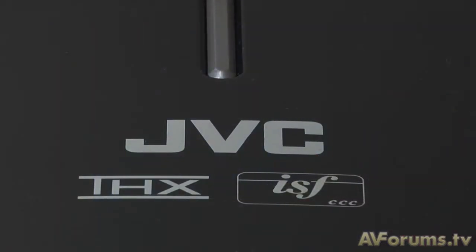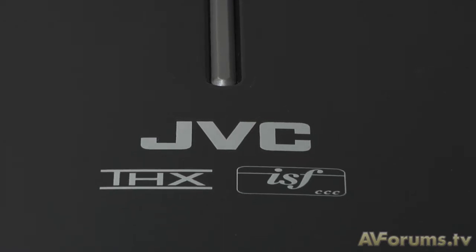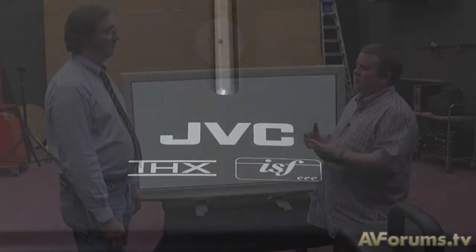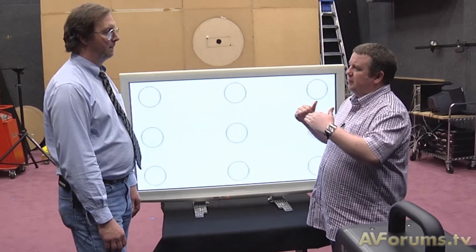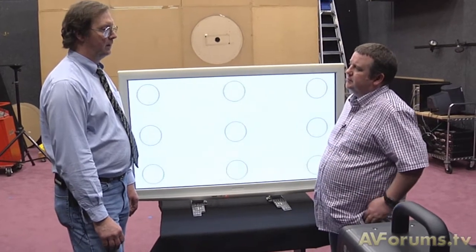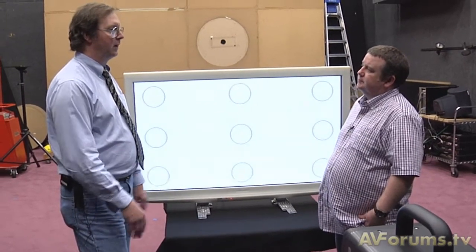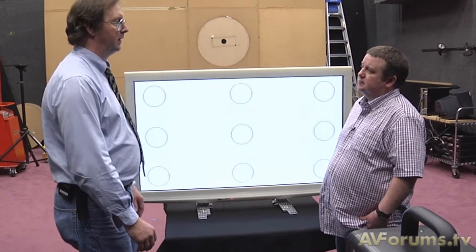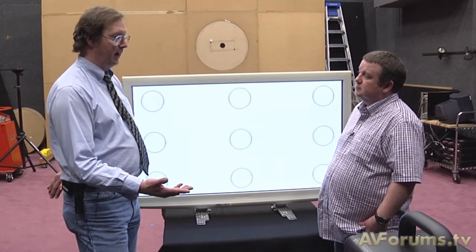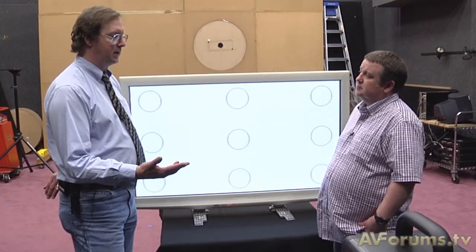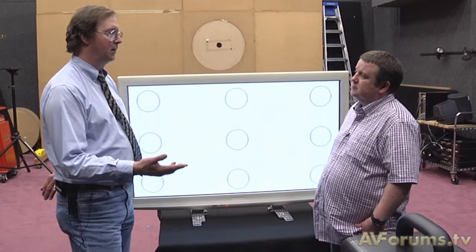And another question a lot of the forum members, especially the projector owners, have asked about the THX mode is: when the lamp ages, obviously the image starts to change. So do you take that into account when you set up your original profile for the projector? The lamp aging is a function of what lamp it is more than anything, and maybe it runs hotter or cooler in any particular device.